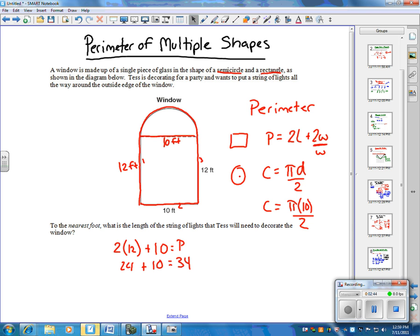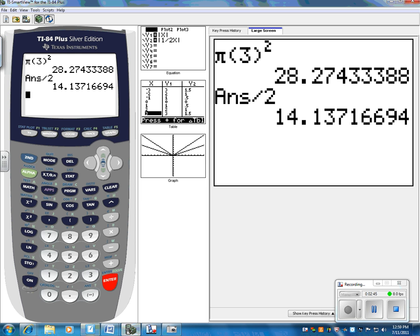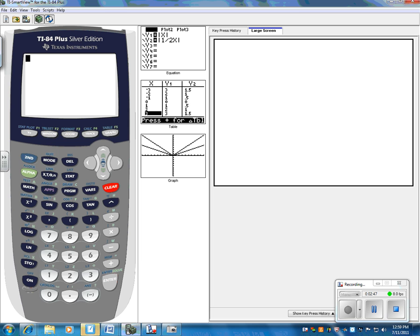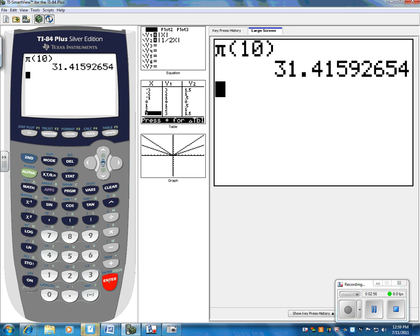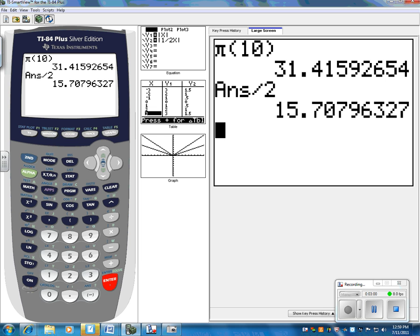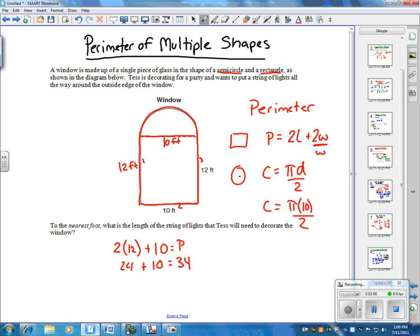So I'm going to go to my calculator. We're going to get the π function out, π times 10. I'm going to get an answer for that. Divide by two, and we get 15.7. So the circumference for the semicircle is 15.7.